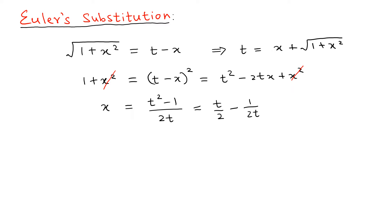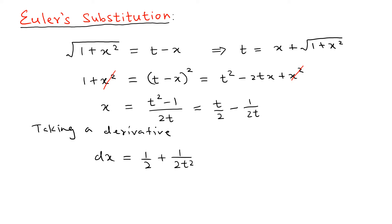Now we differentiate x with respect to t. Taking the derivative of t over 2 gives one half, and the derivative of 1 over t is negative 1 over t squared, so the negative signs cancel and you get 1 over 2t squared. Therefore dx equals one half plus 1 over 2t squared times dt. Pulling out one half with a common denominator of t squared, we get dx equals t squared plus 1 over t squared times dt.